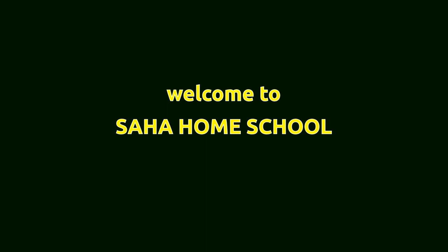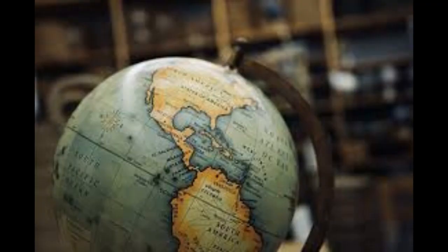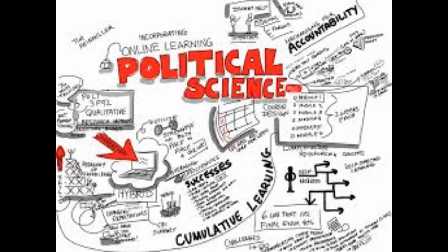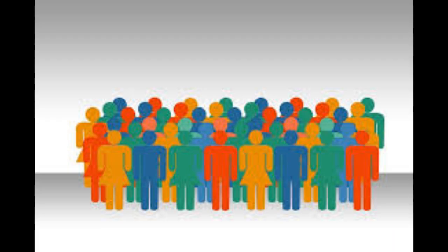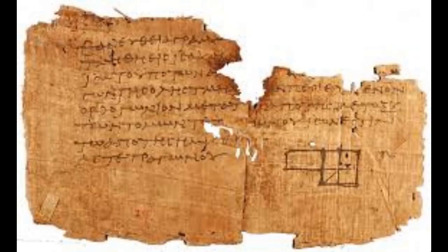In Social Science, we study different subjects like History, Geography, Political Science, Economics, Sociology, etc. This chapter is related with the subject History. History can be classified into Ancient History, Medieval History, and Modern History.